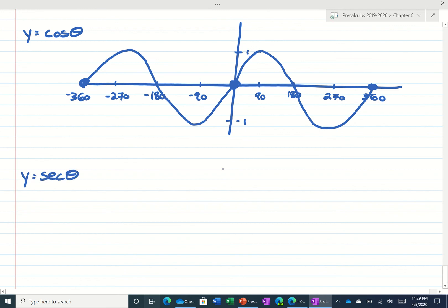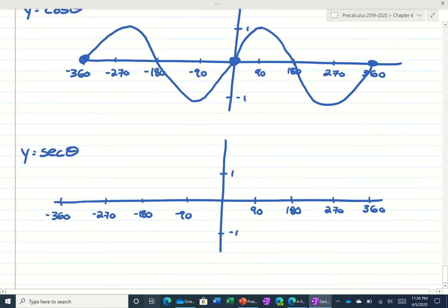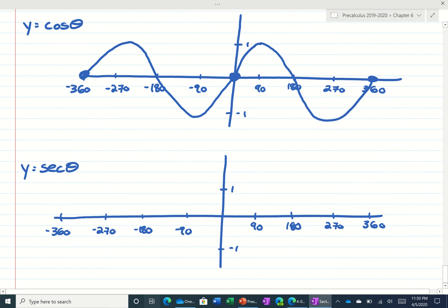Similarly with secant. And the way we figure out what secant is, we just need to take a look at cosine and we do the reciprocal. So looking at zero degrees, I know cosine is one, so secant would be one over one, which is one. Actually at 90 it's zero, so secant would be one over zero, which is undefined.